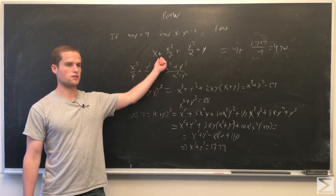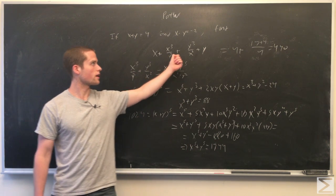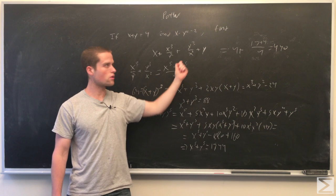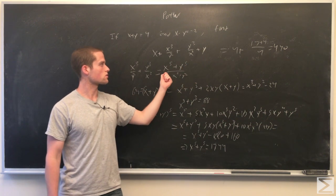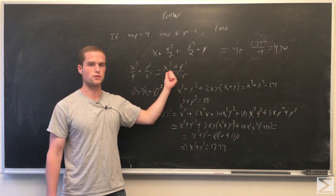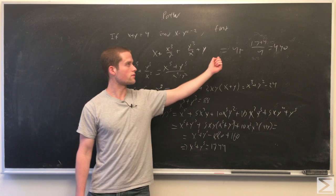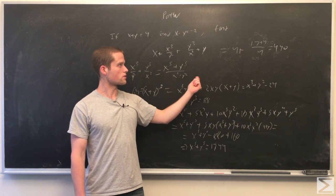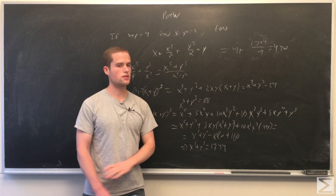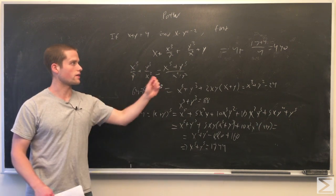So we have x plus x cubed over y squared plus y cubed over x squared plus y, group x plus y equals 4. That's 4 plus x to the fifth plus y to the fifth over x squared times y squared. So that's 1744 over 4, which is 436. So 4 plus 436 gives us 440, and that's our final answer.